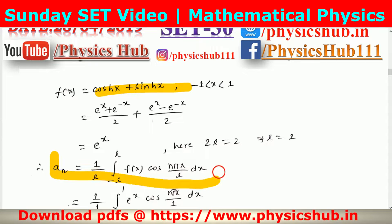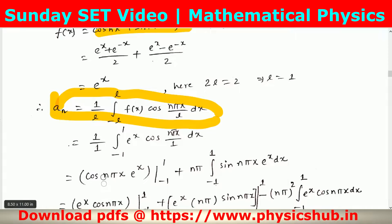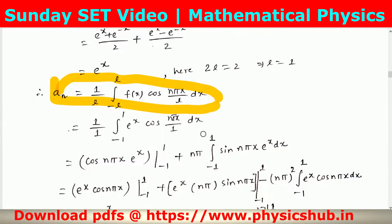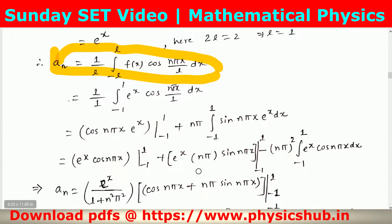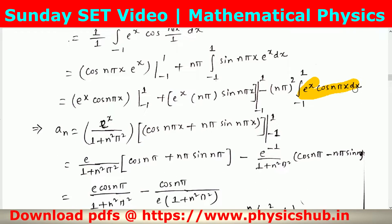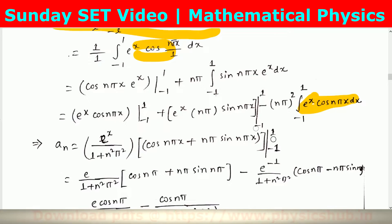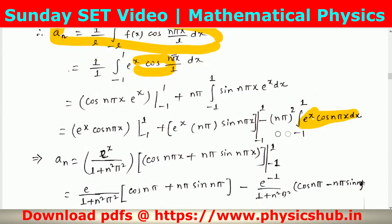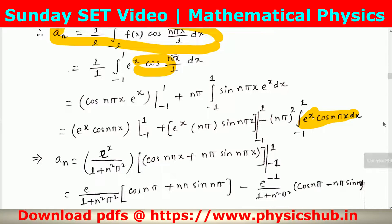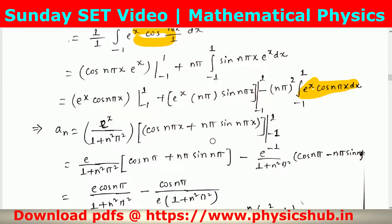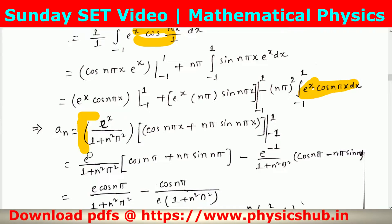Substituting l=1, we compute aₙ = ∫₋₁¹ eˣ·cos(nπx) dx. Using integration by parts, a repetition of the integral eˣ·cos(nπx) dx appears, which we bring to the left side. This gives a factor of (1 + 1/(n²π²)), leading to the expression: eˣ/(1 + n²π²) · [cos(nπx) + nπ·sin(nπx)], evaluated from −1 to 1.